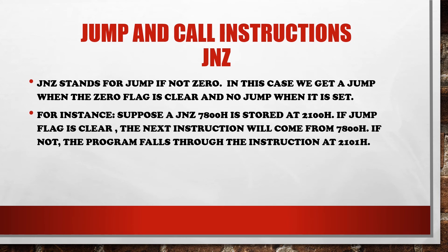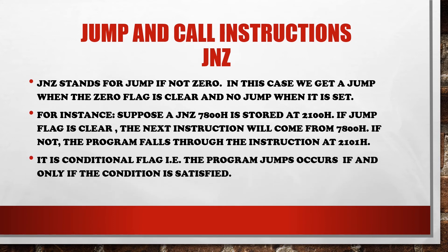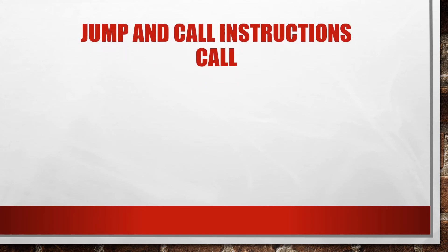For instance, suppose JNZ 7800H is stored at address 2100H. If the zero flag is clear, the next instruction will come from address 7800H. If not, the program falls through to the instruction at address 2101H. It is a conditional jump — the program jump occurs if and only if the condition is satisfied; if not, the jump will not occur. That is all about the JNZ jump instruction of SAP-2.